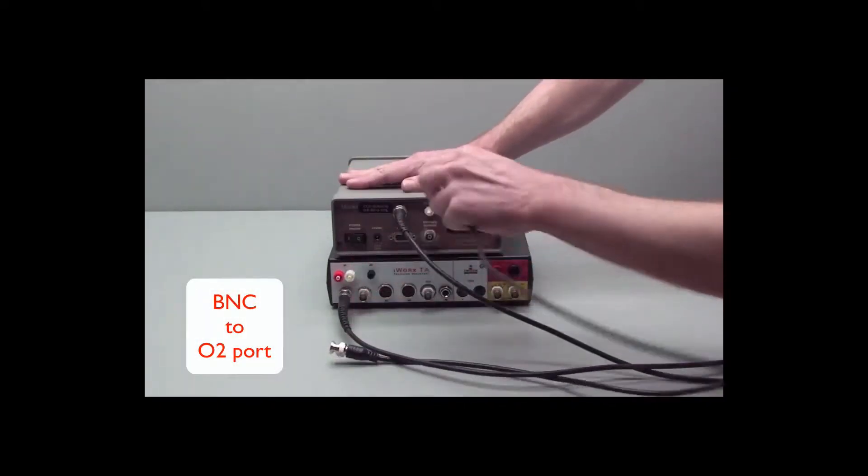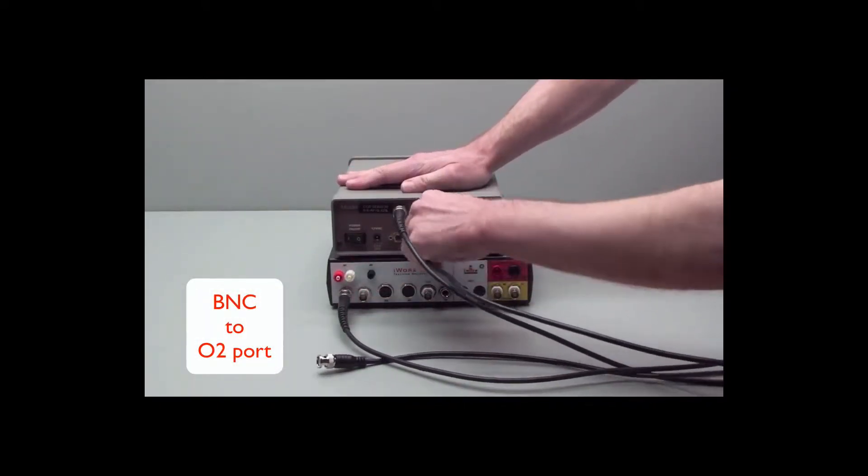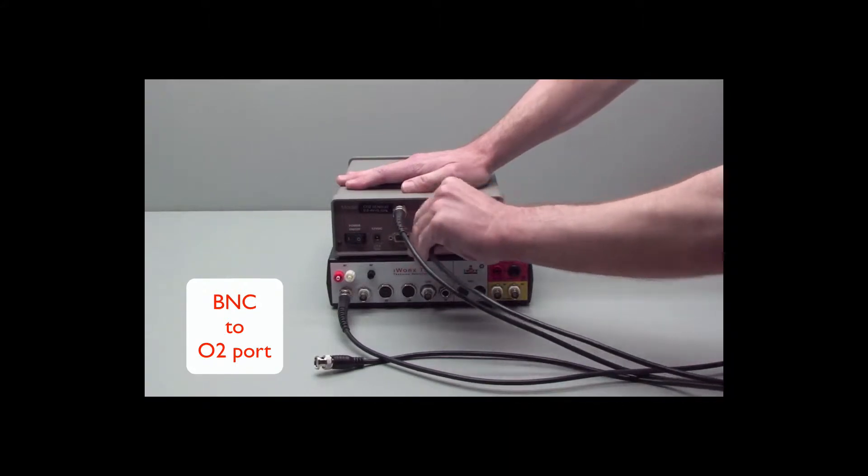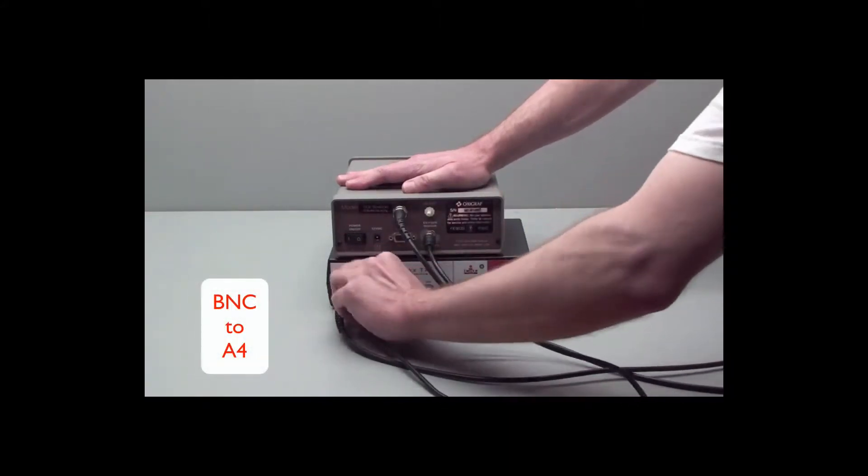Take the other BNC that goes to your O2 port, and the other end of it goes to channel A4 on the front of your TA.